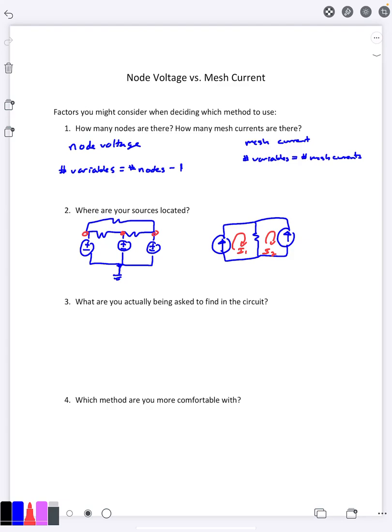I do remember an exam question I gave once where if you used one technique you had three equations and three variables, and if you use the other one you would have seven equations, seven variables, and obviously one would be a lot easier than the other there.